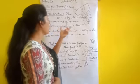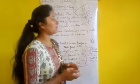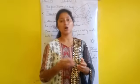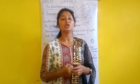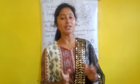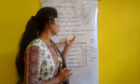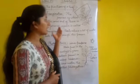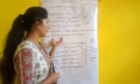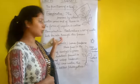Vapour ke form mein water droplets green leaves se comes out hooti hai. Toh ye transpiration ki process hai. Yeh leaf ka ek function hai, jis se plants release karte hai a lot of water into the air through this process.